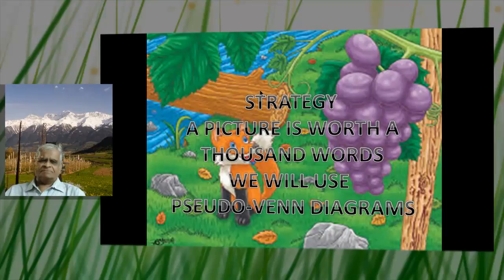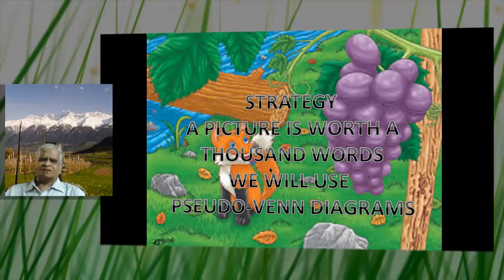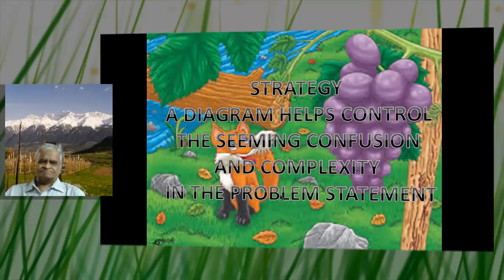Now, the concepts involved are simple but difficult to grasp. So we shall use a picture — a picture is worth a thousand words. We will use two open diagrams. A diagram controls the seeming confusion and complexity in the problem statement.